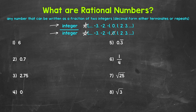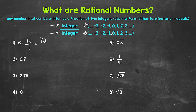Let's jump into our examples, starting with number one, where we have six — a whole number. Can we write six as a fraction of two integers? Yes. For example, we can write six over one, which equals six. Or 12 over two, or 36 over six — all of those equal six. So six can be written as a fraction of two integers, making it a rational number. All whole numbers are going to be rational.